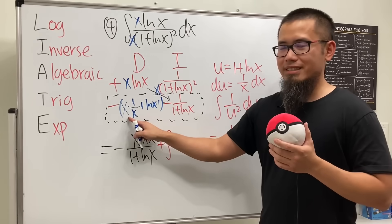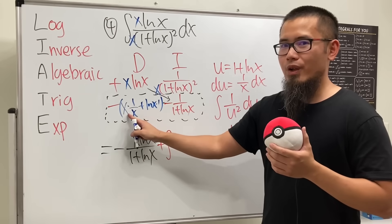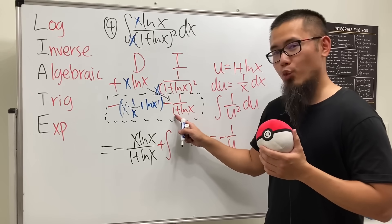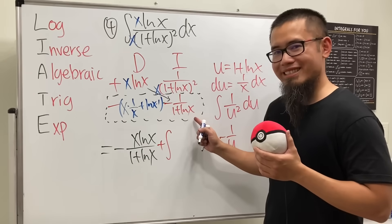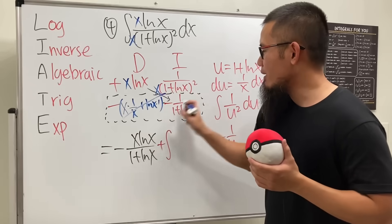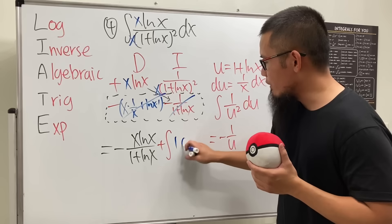Check this out. What's this? This is just 1. 1 and then plus ln x. Here we have 1 plus ln x. When you multiply this, they cancel each other out. So in fact, we just have a 1 right here. And we have to integrate that, right? So this is so wonderful.